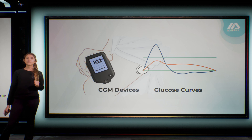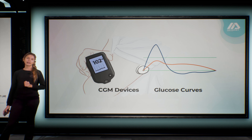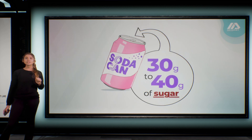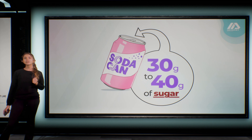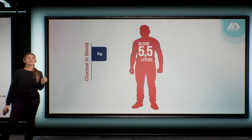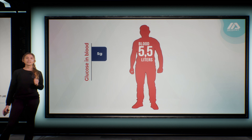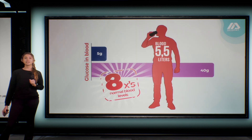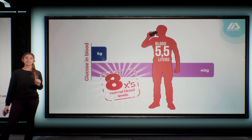We have understood the importance of the glucose curve and the tools to measure it. But today I will explain what actually happens behind a glucose spike. Let's start by looking at the example of drinking a can of soda, which contains about 30 to 40 grams of sugar. This sugar can be either glucose in the form of syrup, or sucrose, either as corn fructose or sugar cane syrup. The body of an adult contains about 5.5 liters of blood, and if glucose levels are around 90 milligrams per liter, there is roughly 5 grams of sugar in the blood. When we drink a can of soda, in just 5 to 10 minutes, we blast 40 grams of sugar into our blood — 8 times the total amount of sugar in our whole blood.